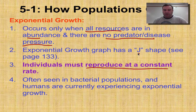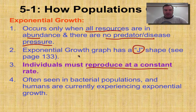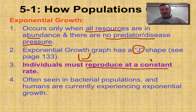An exponential graph is going to have a J shape. If you look at page 133 in your book you're going to see a picture, but I'm going to show you one here. You're going to have a J shape and it basically looks like this — you can say that's a J.